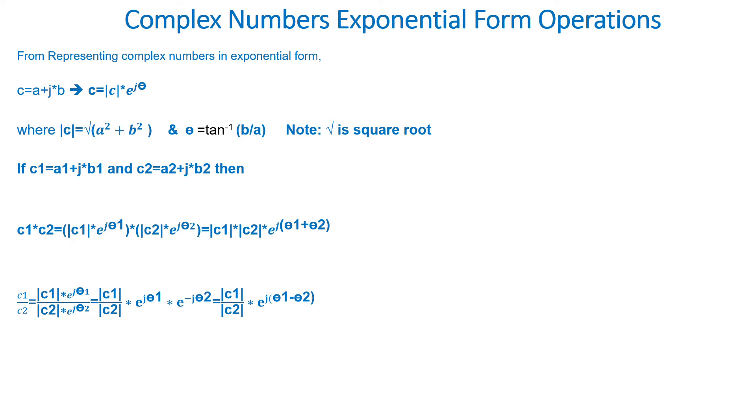Then we can simplify it even further as the magnitude of C1 divided by the magnitude of C2 times e to the power of j times quantity theta 1 minus theta 2.